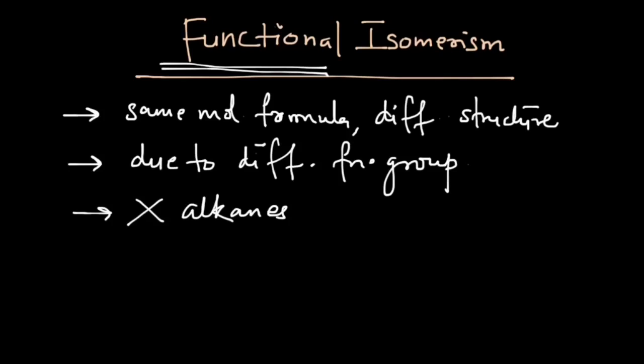functional isomers of a certain class, that is ethers. So we have a fixed relationship about which functional groups have which kind of isomeric functional groups. Let's take a look at the pairs that we have.